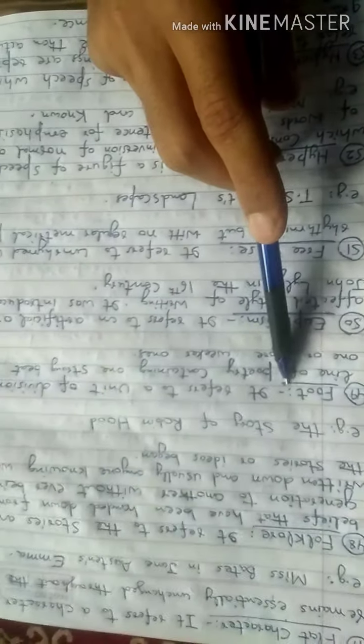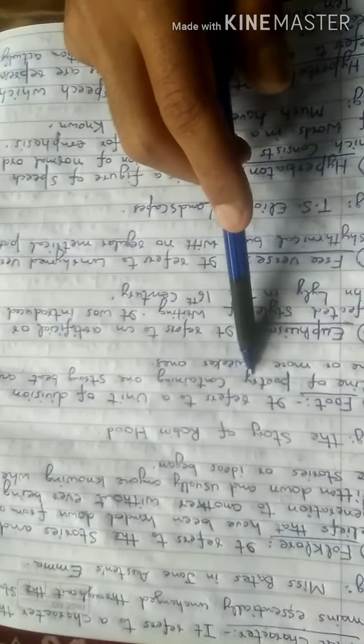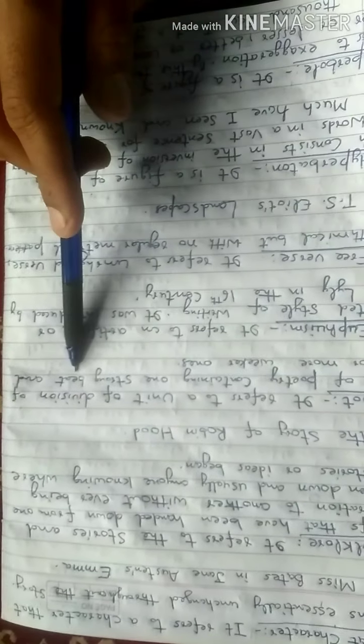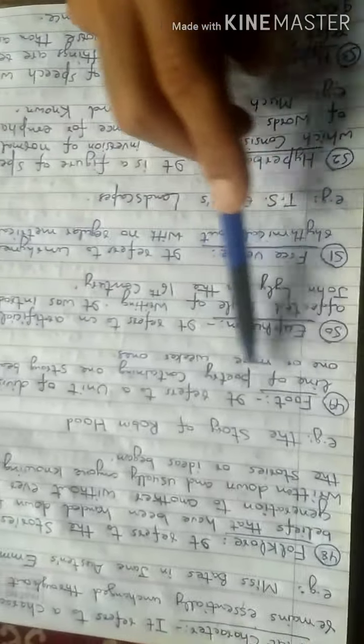The next term is foot. It refers to a unit of verse, of a line of poetry. It is a unit of poetry containing one strong beat and one or more weaker ones.